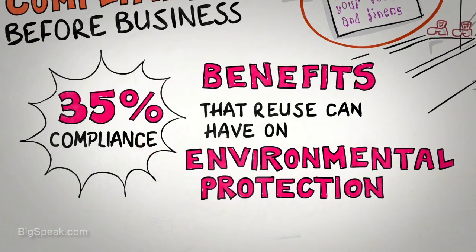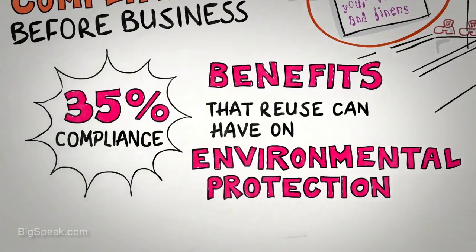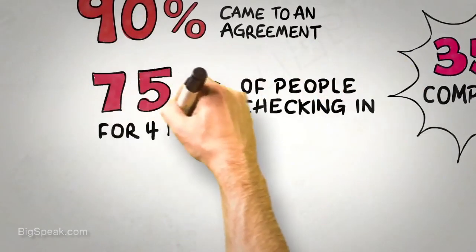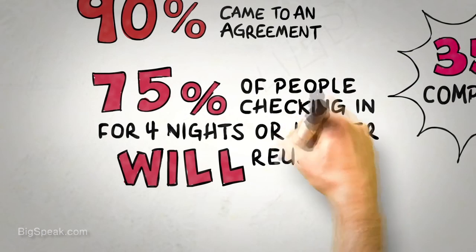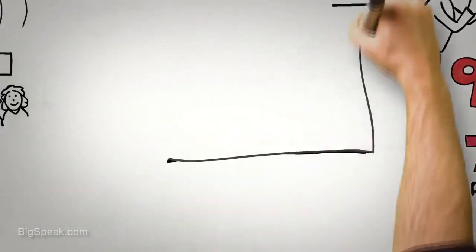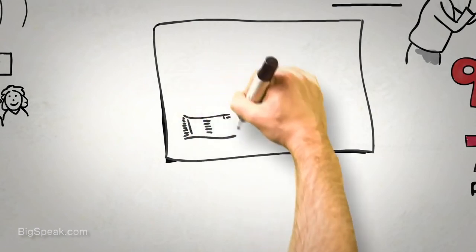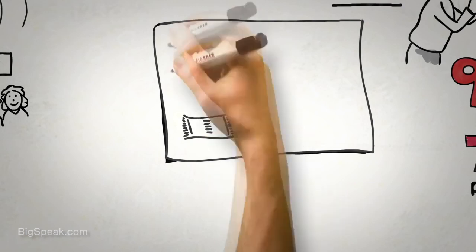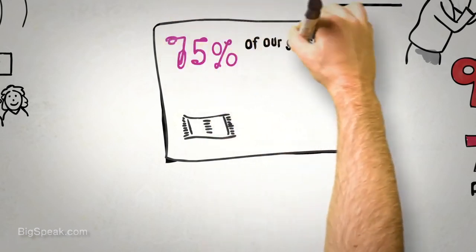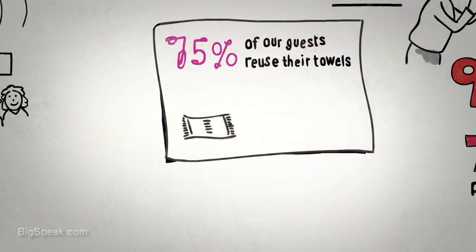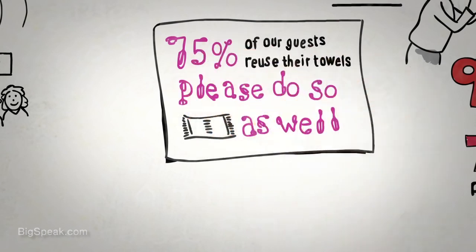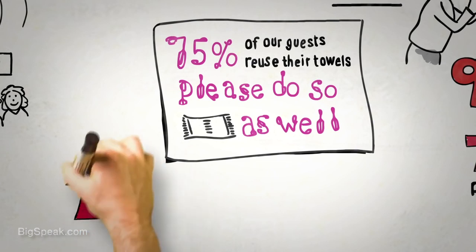But could there be an even more effective way? Well, it turns out that about 75% of people who check into a hotel for four nights or longer will reuse their towels at some point during their stay. So what would happen if we took a lesson from the principle of consensus and simply included that information on the cards and said that 75% of our guests reuse their towels at some time during their stay? So please do so as well. It turns out that when we do this, towel reuse rises by 26%.